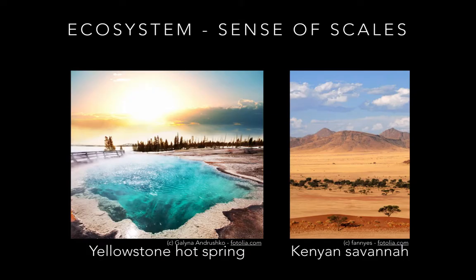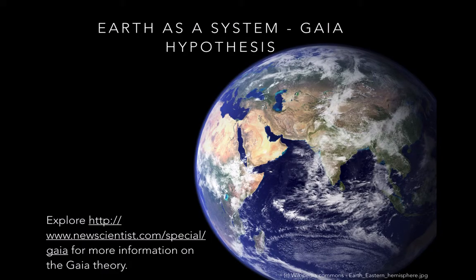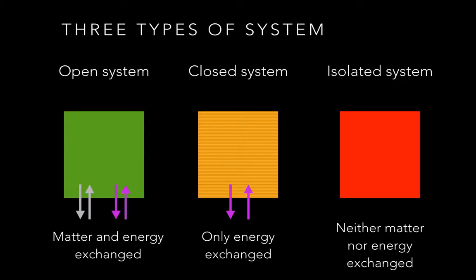Ecological systems come in a variety of sizes. They can range from a single bromeliad plant to hot springs such as the Yellow Sun hot spring, through to large biomes like African savannahs, all the way up to the entire planet. The Gaia hypothesis, proposed by James Lovelock in the 1960s, saw the Earth as an entire living system, with the ability to maintain its systems similarly to how our body uses homeostasis.